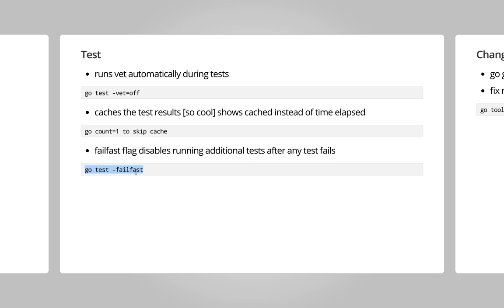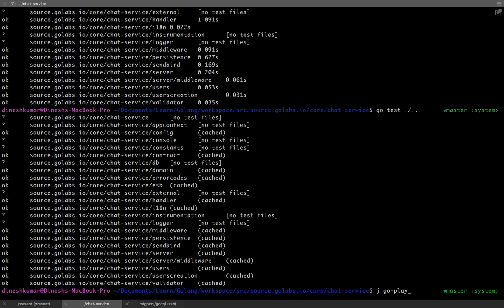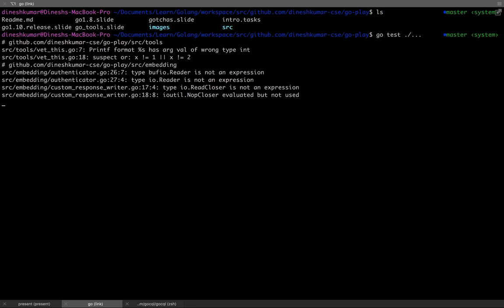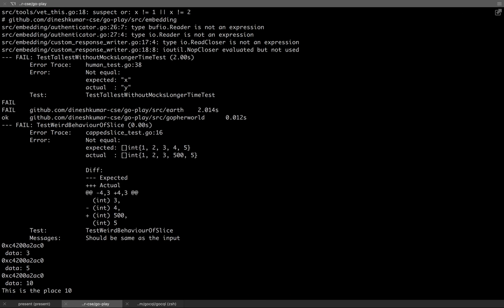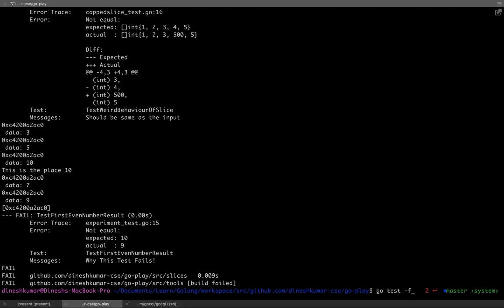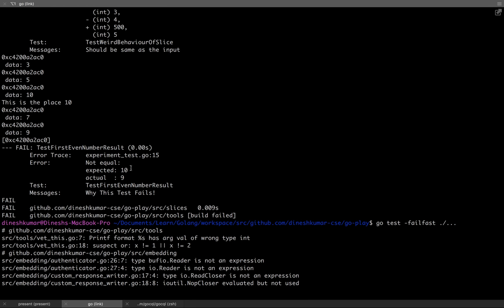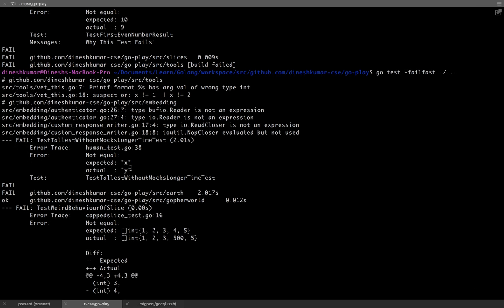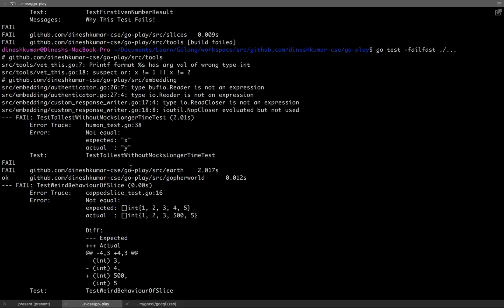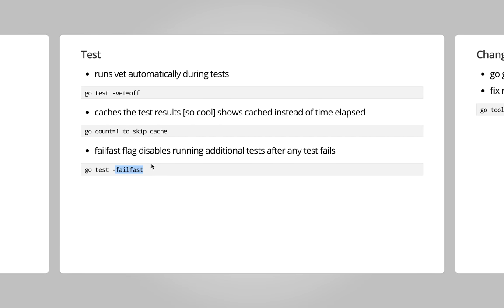Another improvement in testing: when you have a lot of tests failing, it dumps all the information and you have to go look through every failure. But with fail fast — as it stands for — whenever the first test fails it stops the execution. That is what Go 1.10 has. There are multiple failing tests here, but I didn't create a separate one for this demo — it should work as expected.